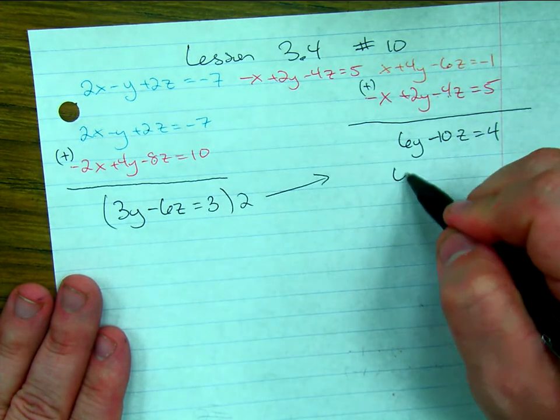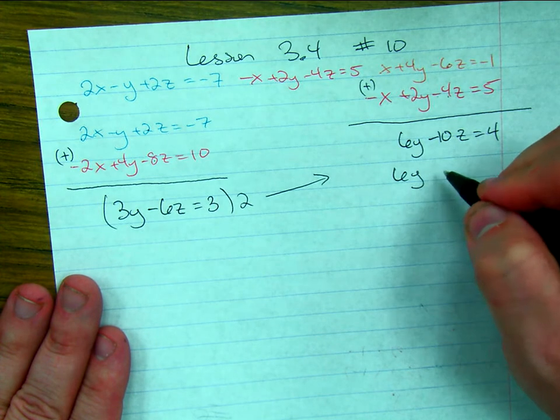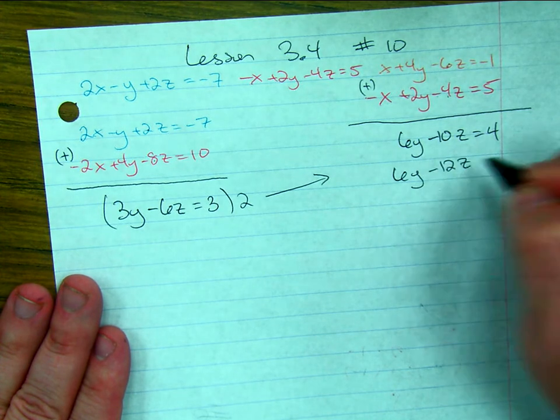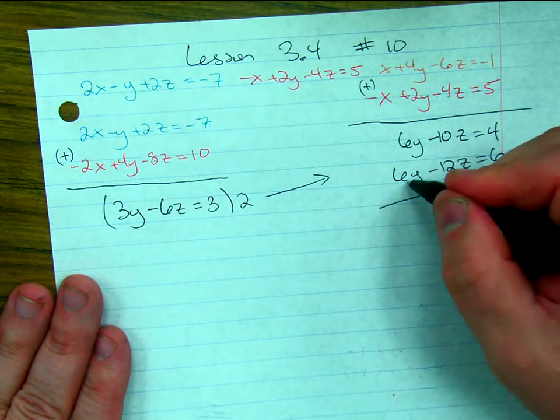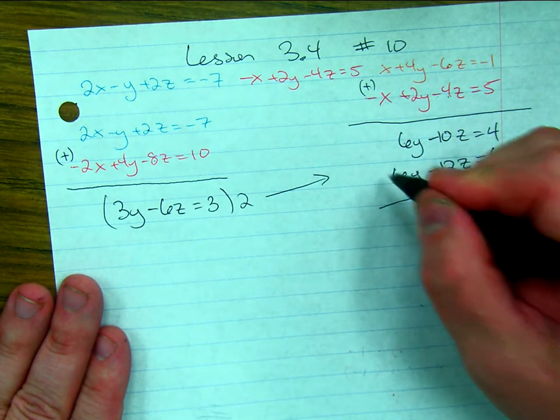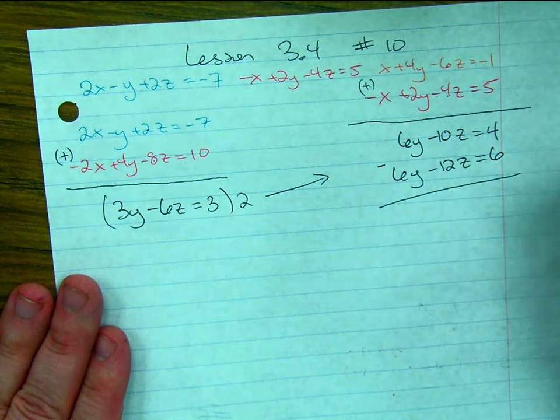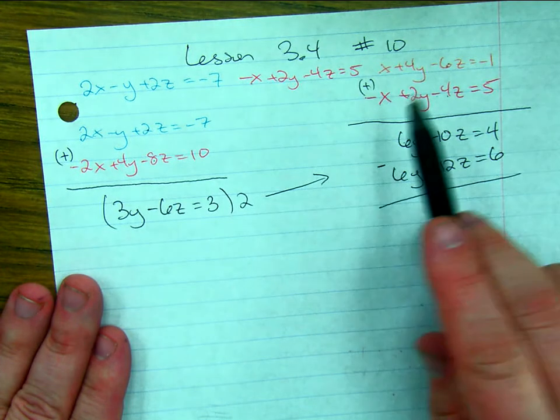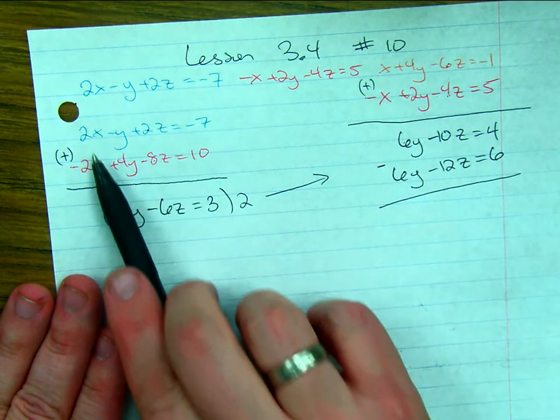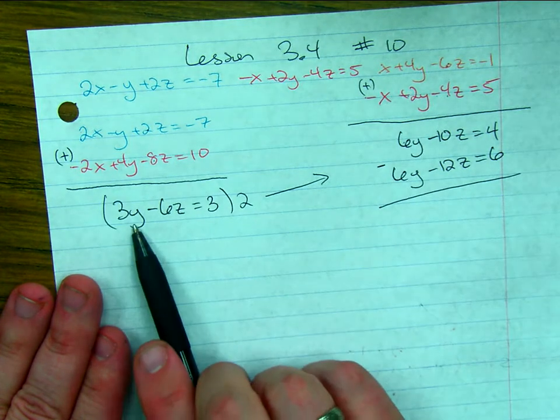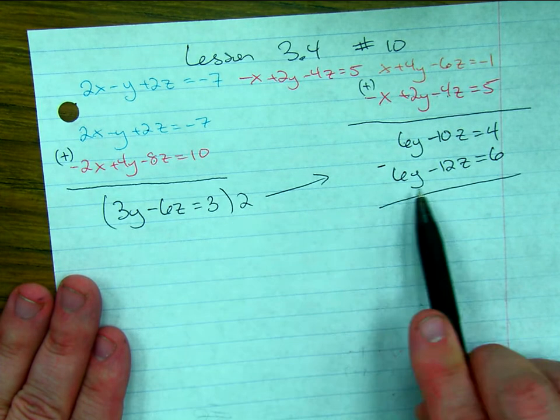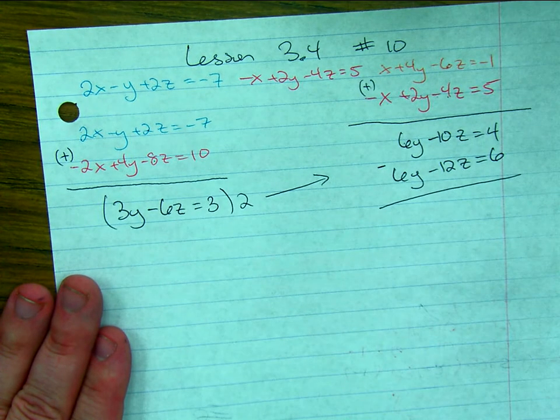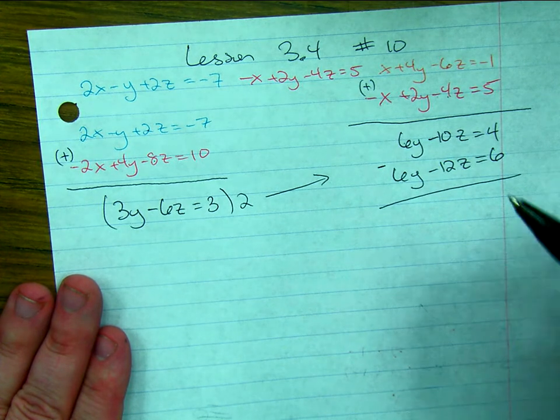That would get me 6y minus 12z equals 6. Now be careful, these have the same sign now, so I'm going to subtract. The last two times I added because they had different signs. Some people would prefer to multiply this equation by negative 2. That way, the y's would have opposite signs and I could simply add. Either one is fine, as long as you stay consistent.